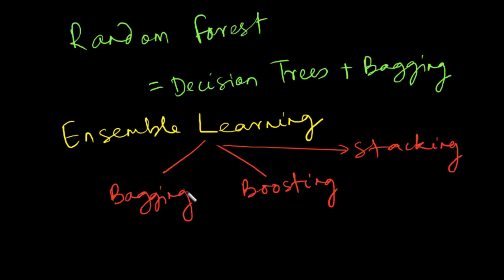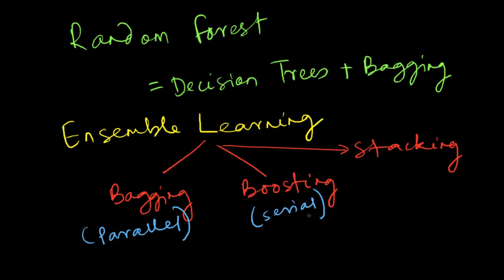Bagging combines different decision trees and takes an average to give a better predictor — it is a parallel algorithm, where you compute different decision trees in parallel and then average them. Boosting, on the other hand, is a serial or sequential algorithm. In boosting, you train your model on the given dataset, figure out which data points are misclassified, give them larger weightage, and rerun the training algorithm to classify them correctly. You carry out this iterative process until you reach some convergence or stabilization.